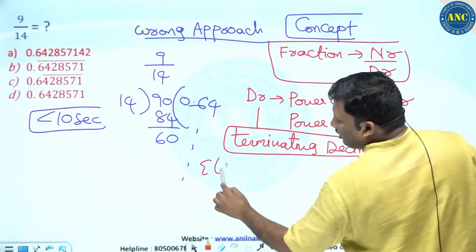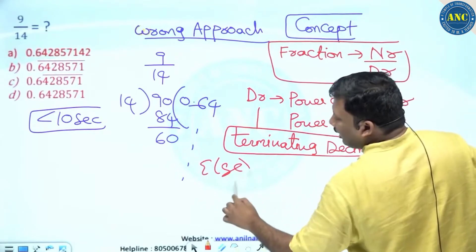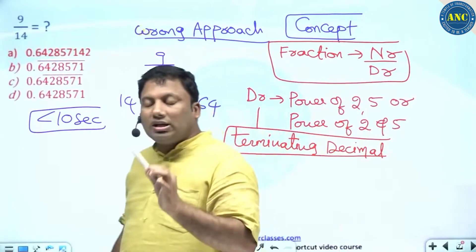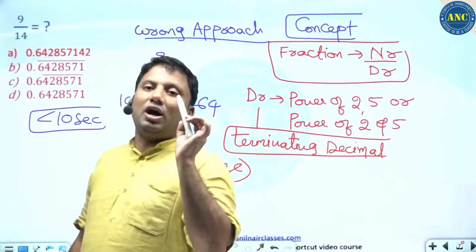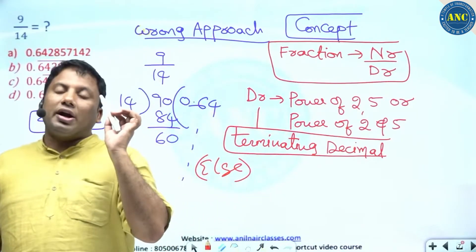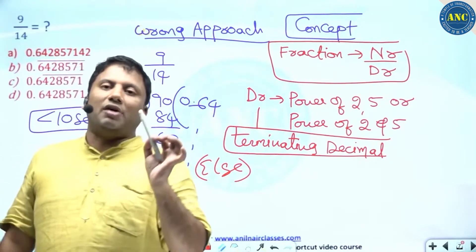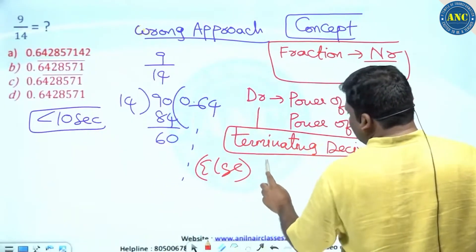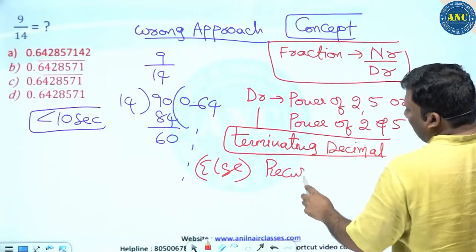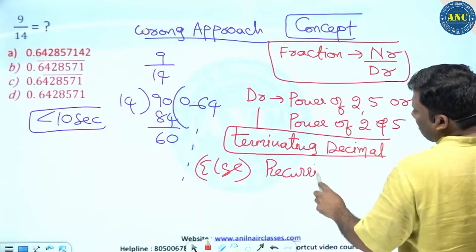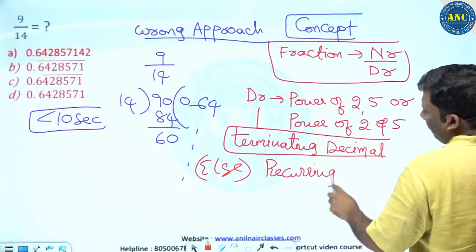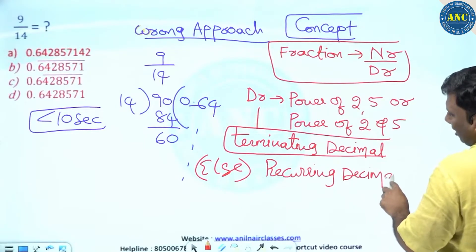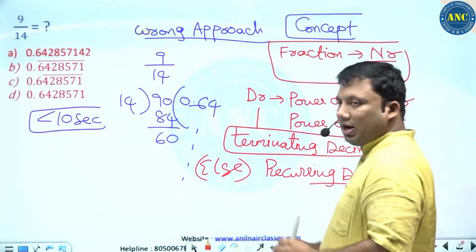Otherwise — meaning if the denominator is not a power of 2, not a power of 5, and not a combination of powers of 2 and 5 — you will get a recurring decimal.